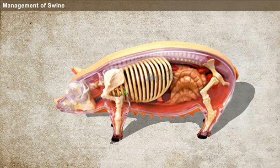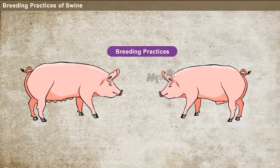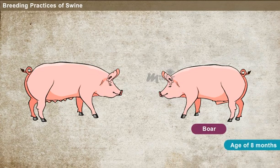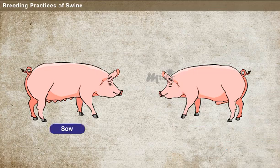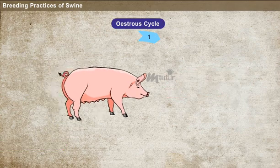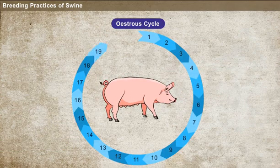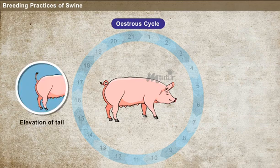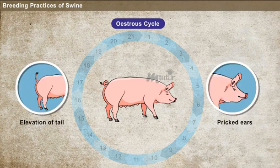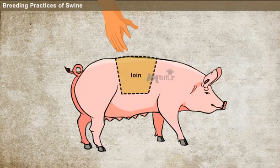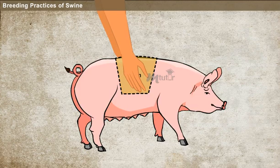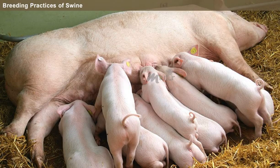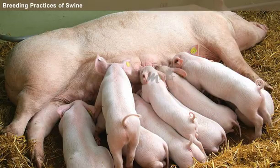Breeding practices. Boars may start breeding at the age of 8 months. Sows normally attain puberty at the age of 6 to 11 months. The average length of the estrus cycle in a sow is 21 days. Elevation of tail and pricked ears are some of the common symptoms of estrus. The best way to detect heat is to press the palms of both hands over the loin region and observe the response of the sow. A good breeding sow should be able to produce about 15 piglets born in a single delivery period.